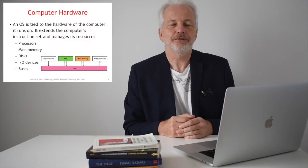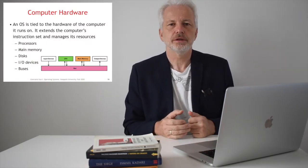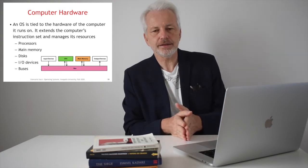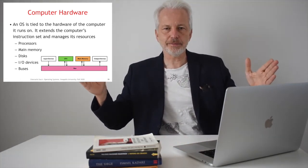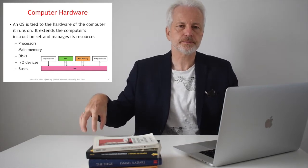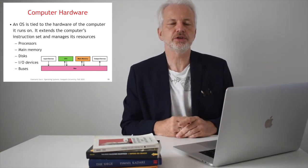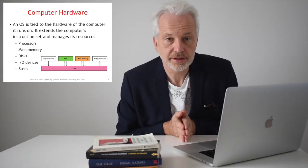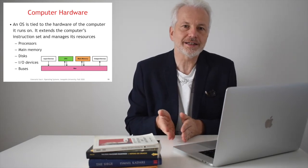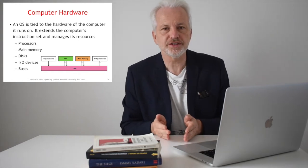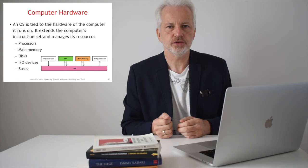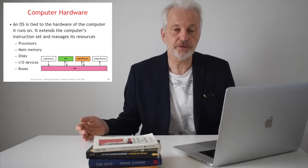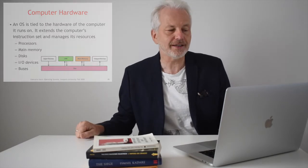Now that we have seen a fast overview of how computers and operating systems evolved throughout history, we focus on the overall structure of the operating system as we will review it throughout the course. We need to see what hardware model we will use. This is just a model — not all computers are built exactly this way — but it helps describe how the operating system works. The model consists of a processor, main memory, disks for secondary storage, I/O devices, and buses.